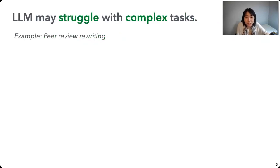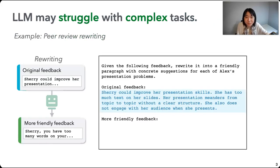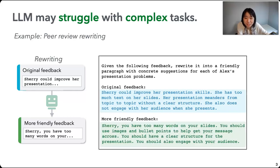But users want to do more things than translation. Many of our users were Google employees, and they really wanted to use the same large language model for rewriting their short summaries into friendly and constructive peer-review paragraphs. Their short summary might look like: 'Sherry could improve her presentation skills. She has too much text on her slides. Her presentation meanders from topic to topic without a clear structure. She also does not engage with her audience.' The model can do the rewriting, but the generation doesn't really match their expectation — it's still pretty mediocre, mostly impersonal and without concrete suggestions. For example, it just says 'you should have a clear structure,' and if I got that feedback, I'd think: well, I still don't know what to do.